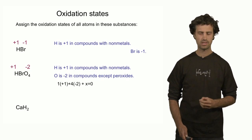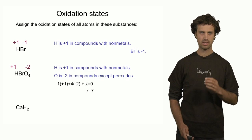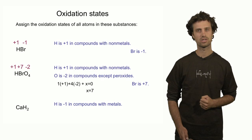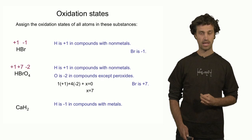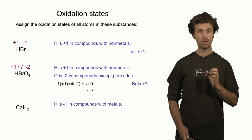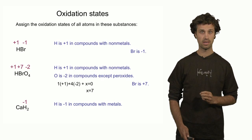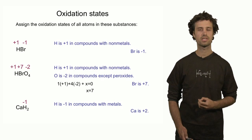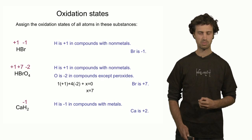The next compound is calcium hydride. In this compound, the hydrogen is actually bonded to a metallic element, and that means that the oxidation state of the hydrogen is minus one. There are two hydrogens, so if we have to make a neutral compound, that means two times minus one plus the oxidation state of calcium equals zero. And that means that the oxidation state of the calcium ion in this compound must be plus two.